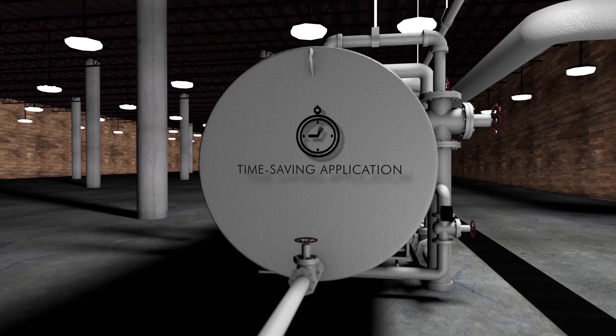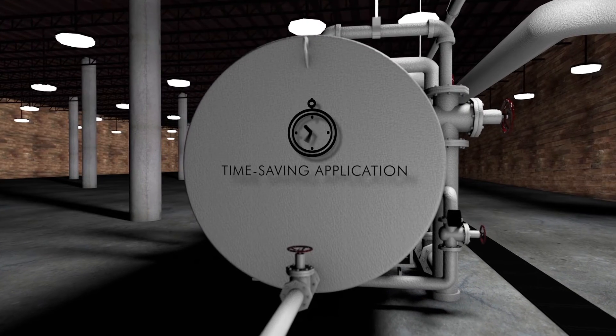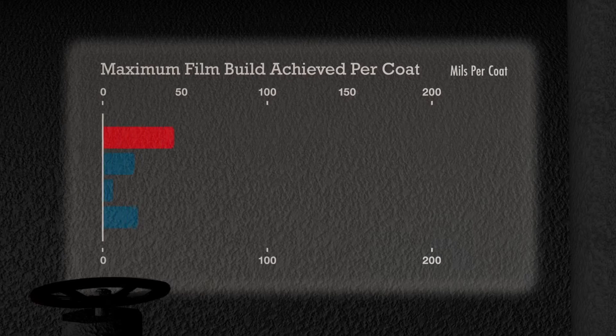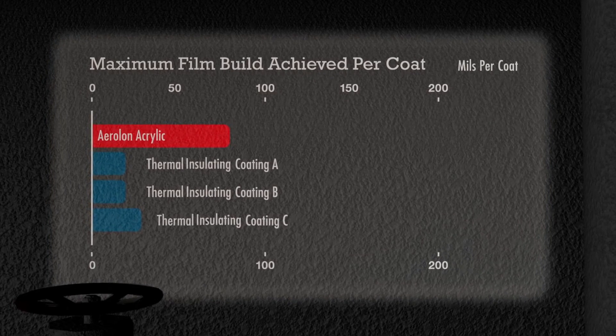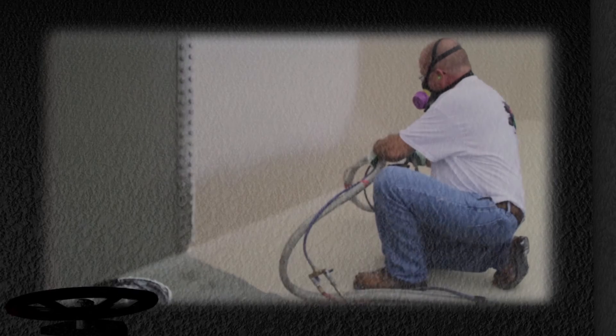When compared to other fluid-applied insulating coatings, Aerolan coatings achieve a two to six times higher film build per coat. So installation time is fast, reducing facility downtime and saving substantially on labor costs.